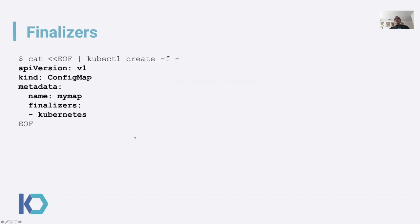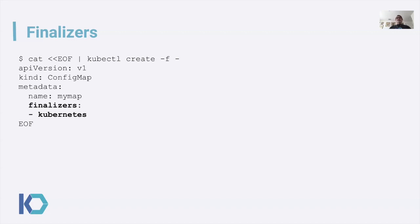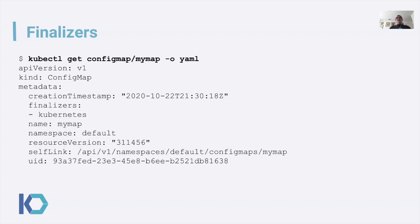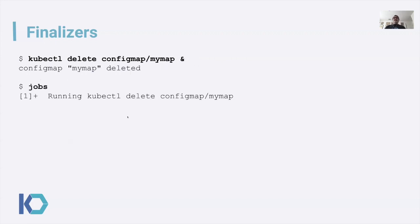I'm going to start off this demo with a custom config map which has no properties but contains a finalizer. Finalizers are on the metadata of the object — they are a list of strings. In this case, I am adding a Kubernetes finalizer to this object. Kubernetes finalizer is a dead finalizer for a config map; a config map resource controller doesn't understand what to do with this. Kubernetes finalizer is actually used on namespaces. So this is going to produce some interesting results. Here I'm going to create this config map with the finalizer, and here you can see that the finalizer has been created.